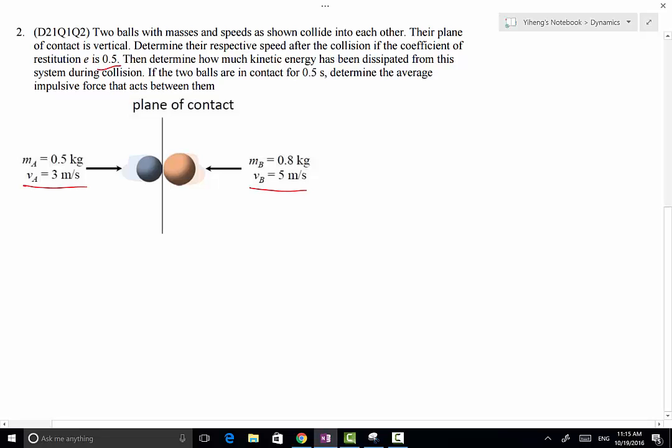We also need to determine how much kinetic energy has been dissipated from the system during this collision, and if the two balls are in contact for 0.5 seconds, we need to determine the average impulsive force that acts between them.